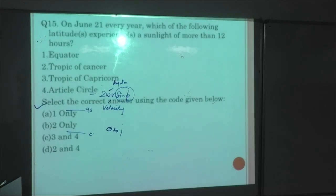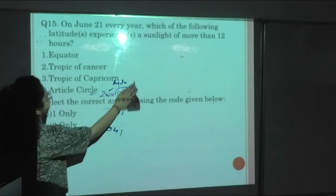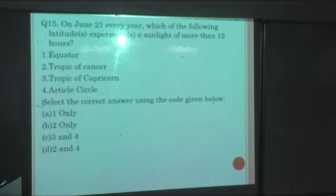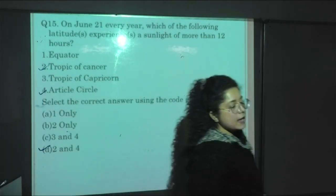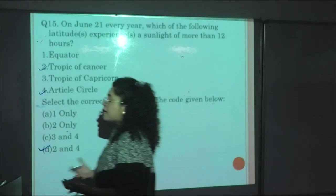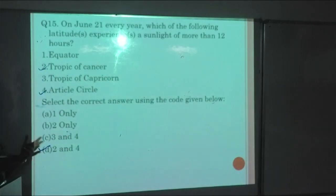Next question: On June 21 every year, which of the following latitudes experiences sunlight of more than 12 hours? This question is related to your summer solstice. Options: Equator, Tropic of Cancer, Tropic of Capricorn, Arctic Circle. Your Tropic of Cancer and your Arctic Circle, that is 2 and 4, is correct. If your summer solstice is marked there, then there is more than 12 hours. For example, in the June month, you will prominently see there is more than 12 hours.